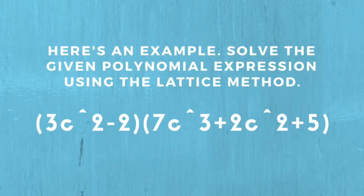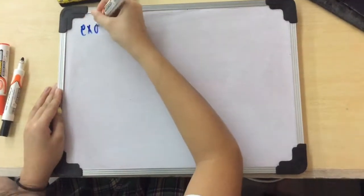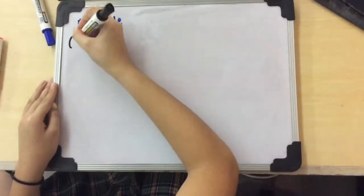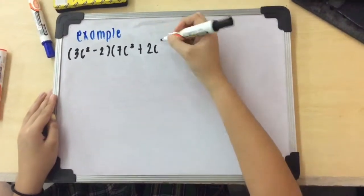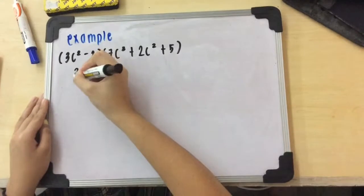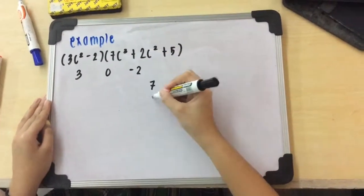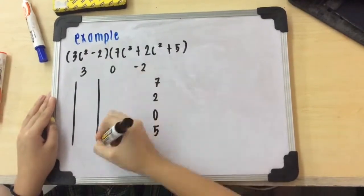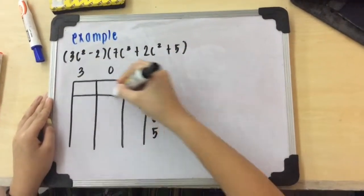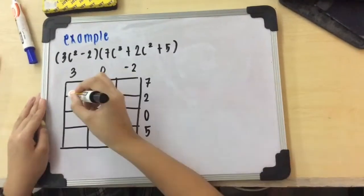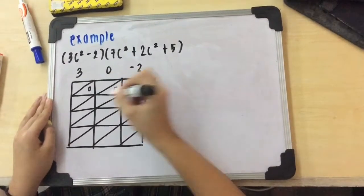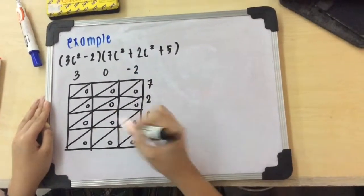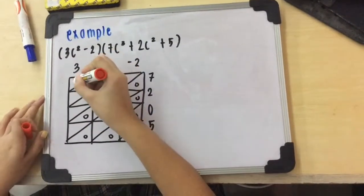So how do we solve using the lattice method? First, you need to get the coefficients of both sides. For the left side, the coefficients are going to be put on top — they serve as the rows. And the coefficients from the right side will serve as the columns. Then you're going to create boxes and divide them into halves, making it easier to see the diagonal lines. Then multiply the columns to the rows.